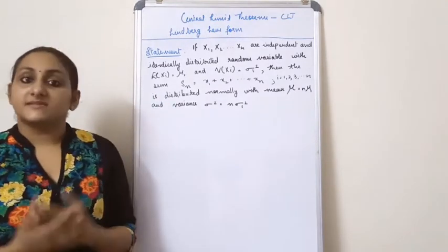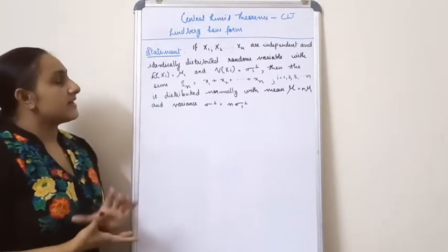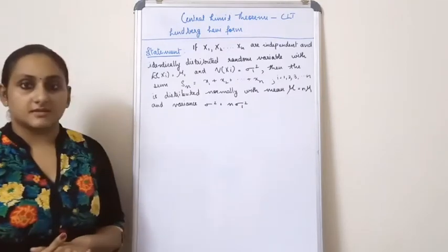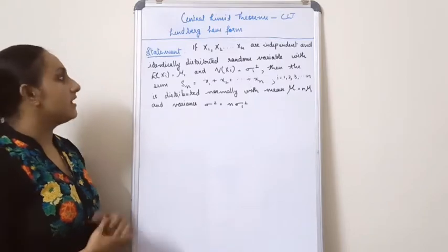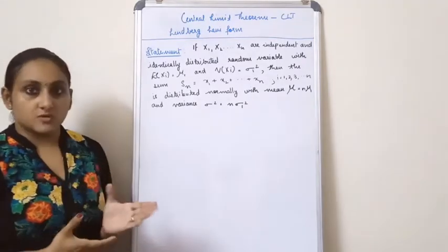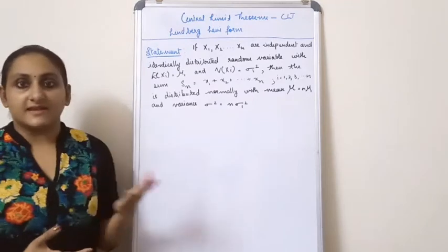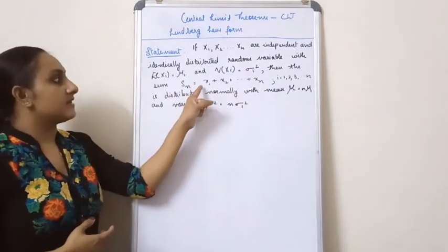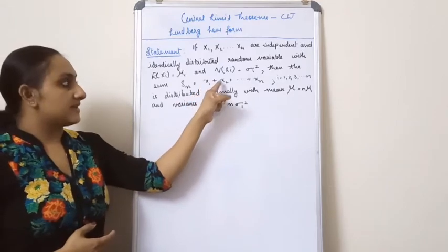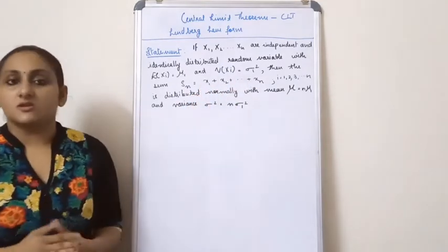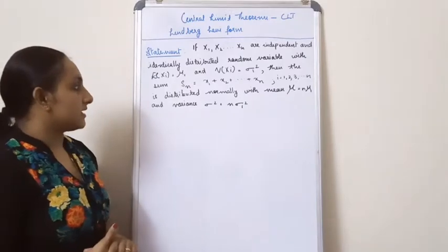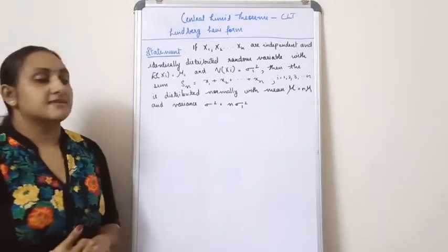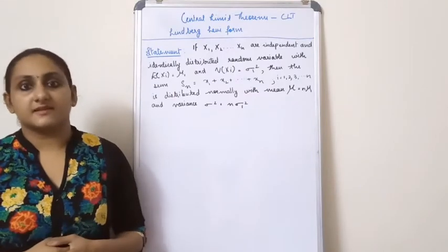The statement is that if x1, x2, ..., xn are independent and identically distributed random variables with E[xi] = μ₁ and Var(xi) = σ₁², then the sum Sn = x1 + x2 + ... + xn is distributed normally with mean μ = nμ₁ and variance σ² = nσ₁².